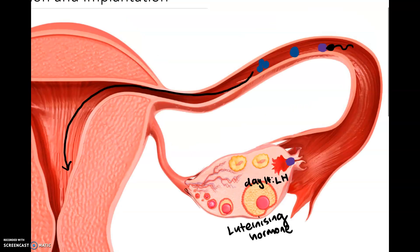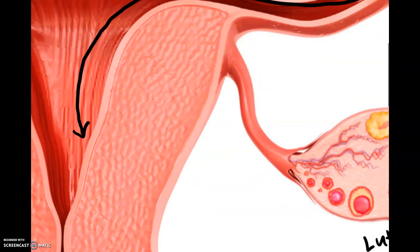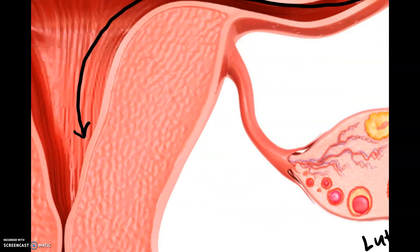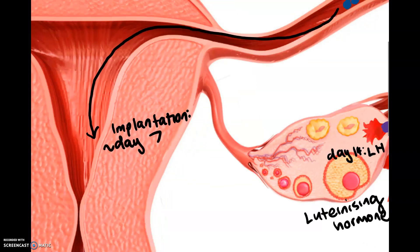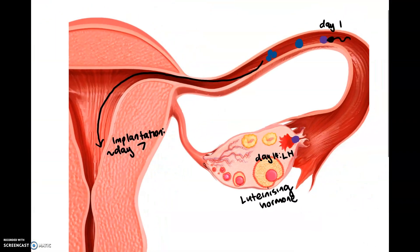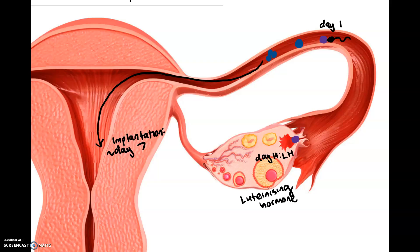If fertilization is said to occur at day one, the process of implantation occurs at day seven — approximately one week after the process of fertilization.